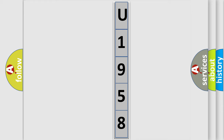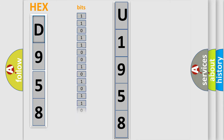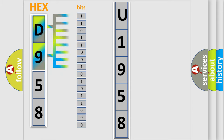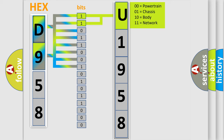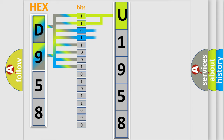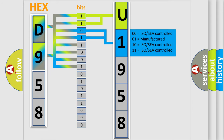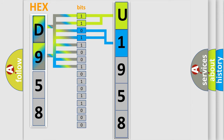The error code is split into two bytes consisting of 16 bits. One bit is the basic unit that each computer works with. The bit has two logical states: zero, low level, and one, high level. By combining the first two bits, the basic character of the error code is expressed. The next two bits determine the second character.